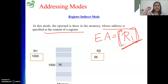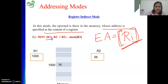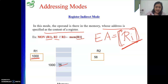Let's see one example. Consider: MOV [R1], R2. This means R1 is a CPU register holding one content, and that content represents an address. At that address, your data is there, and that data we are moving to register R2. So R2 will be holding 56 after the end of this instruction. So the address is not part of the instruction — rather, the register name is part of the instruction, and the register holds the address of your operand.